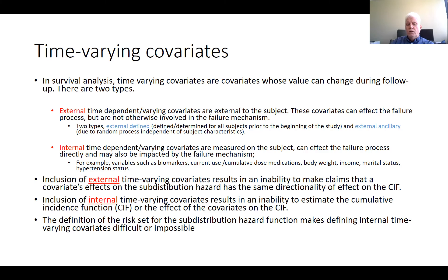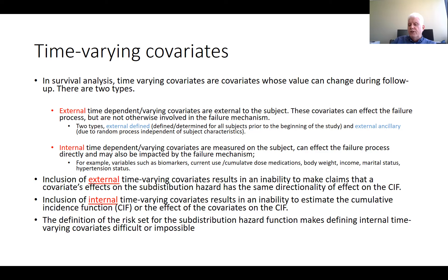Inclusion of external time-varying covariates results in an inability to make claims that a covariate's effect on the sub-distribution hazard has the same directionality of effect on the cumulative incidence function. Inclusion of internal time-varying covariates results in an inability to estimate the cumulative incidence function or the effect of the covariates on the cumulative incidence function. In addition, the definition of the risk set for the sub-distribution hazard function makes defining internal time-varying covariates difficult or impossible.